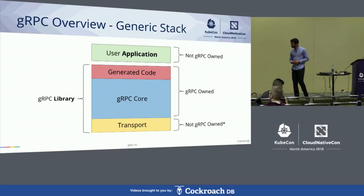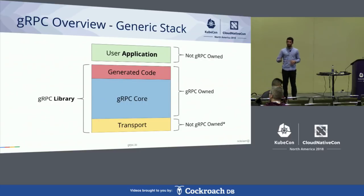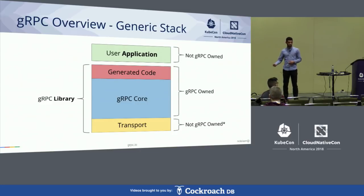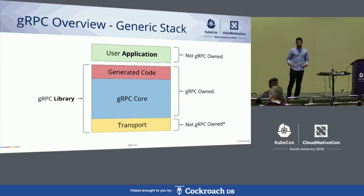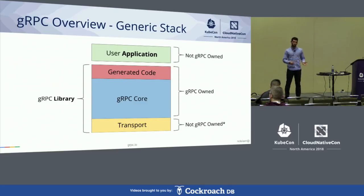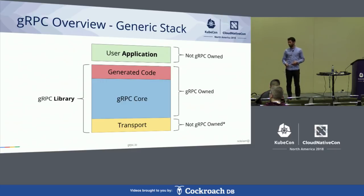A generic stack for gRPC looks like this. At the top in green, you have a user application — the code actually calling the gRPC APIs. The first entry point into the library is a layer of generated code, which is API-specific. You feed a proto file with your service definitions into a generating process and it spins up that generated code layer. The generated code hooks into the core library where the main functionality is implemented, and then lower down is a transport — a library or set of system calls that knows how to put bytes onto a wire.